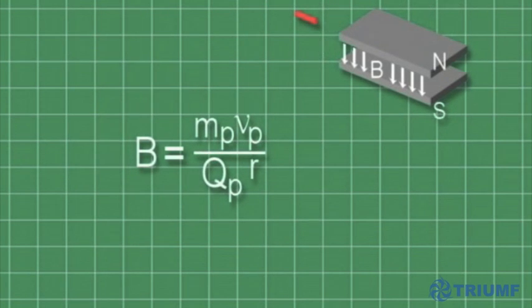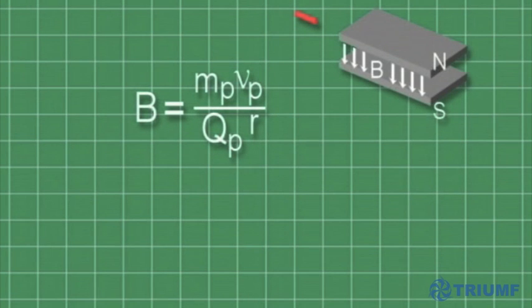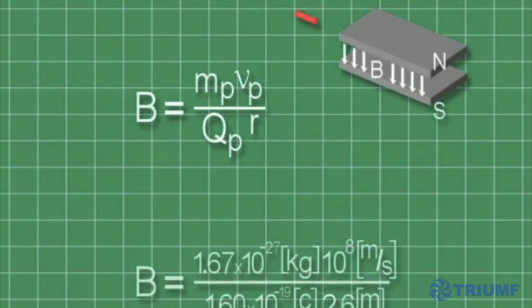Now let's rearrange this formula to show the magnetic field as a function of the radius of curvature. After plugging in the known values for the proton mass, charge and velocity, and the radius of curvature, we can calculate the magnetic field.